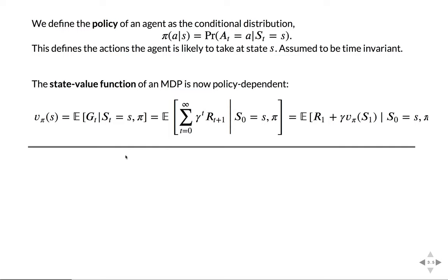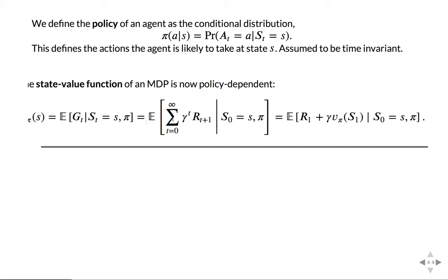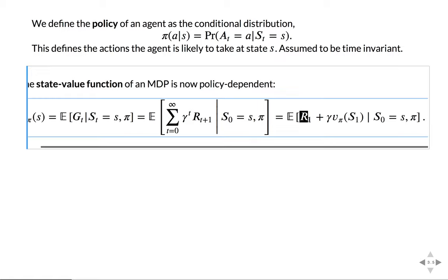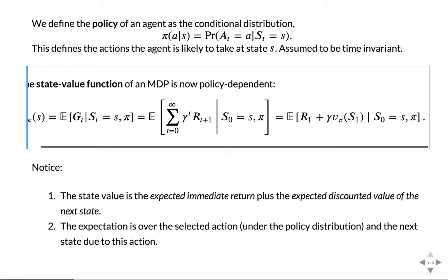Now that we have this policy, we can define the state value of the MDP by adding the policy. It's the expected value of the gain starting from state s given the policy. You can see it breaks up into the reward you're going to get immediately and the discounted value of the next state. Both have to be in the expectation because you don't know what action will be performed. Explicitly, you have the expectation over the immediate return — since you don't know the action, you use the policy to go over all possible actions — and the expectation over both the action and the next state for the discounted value.